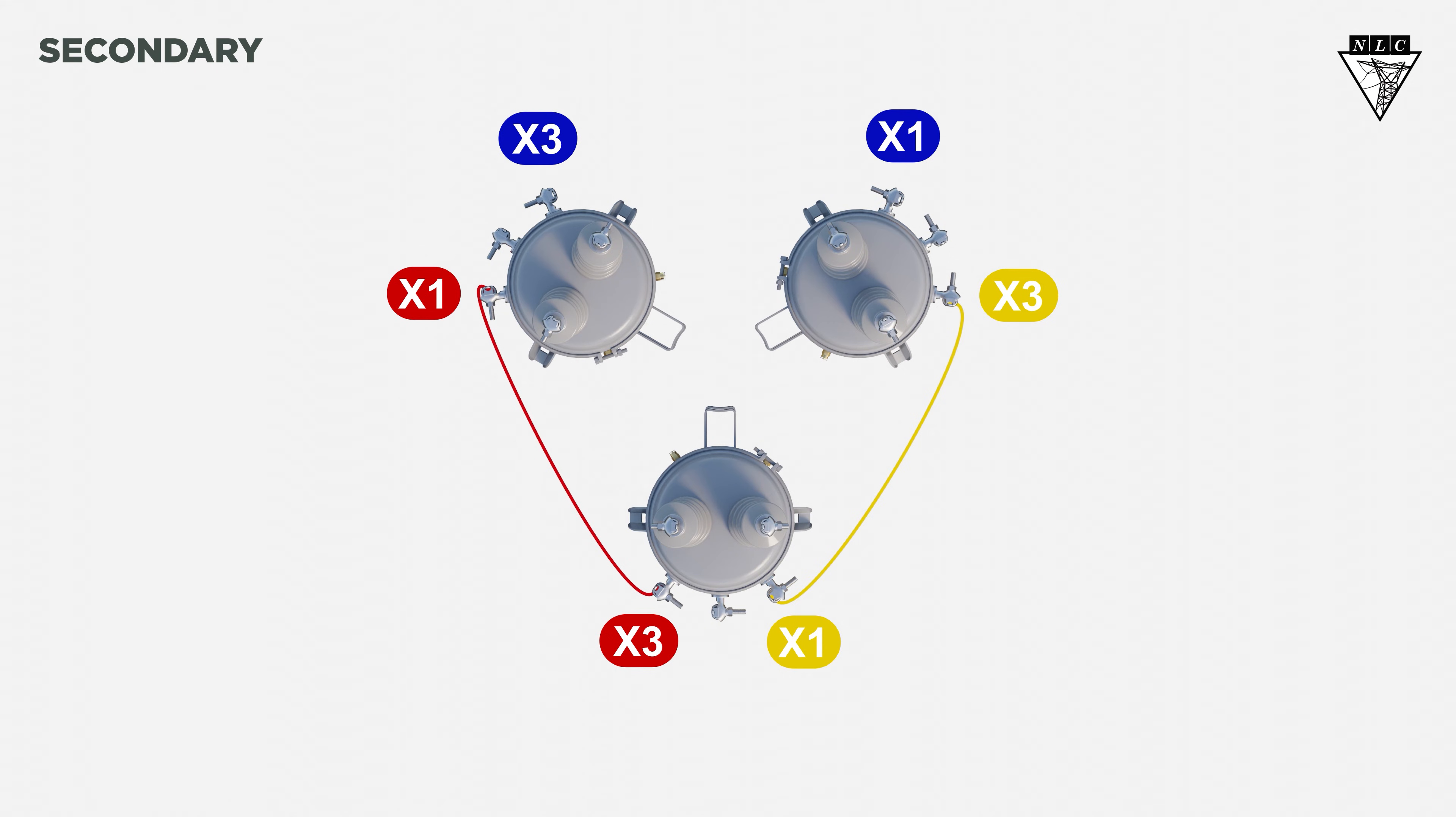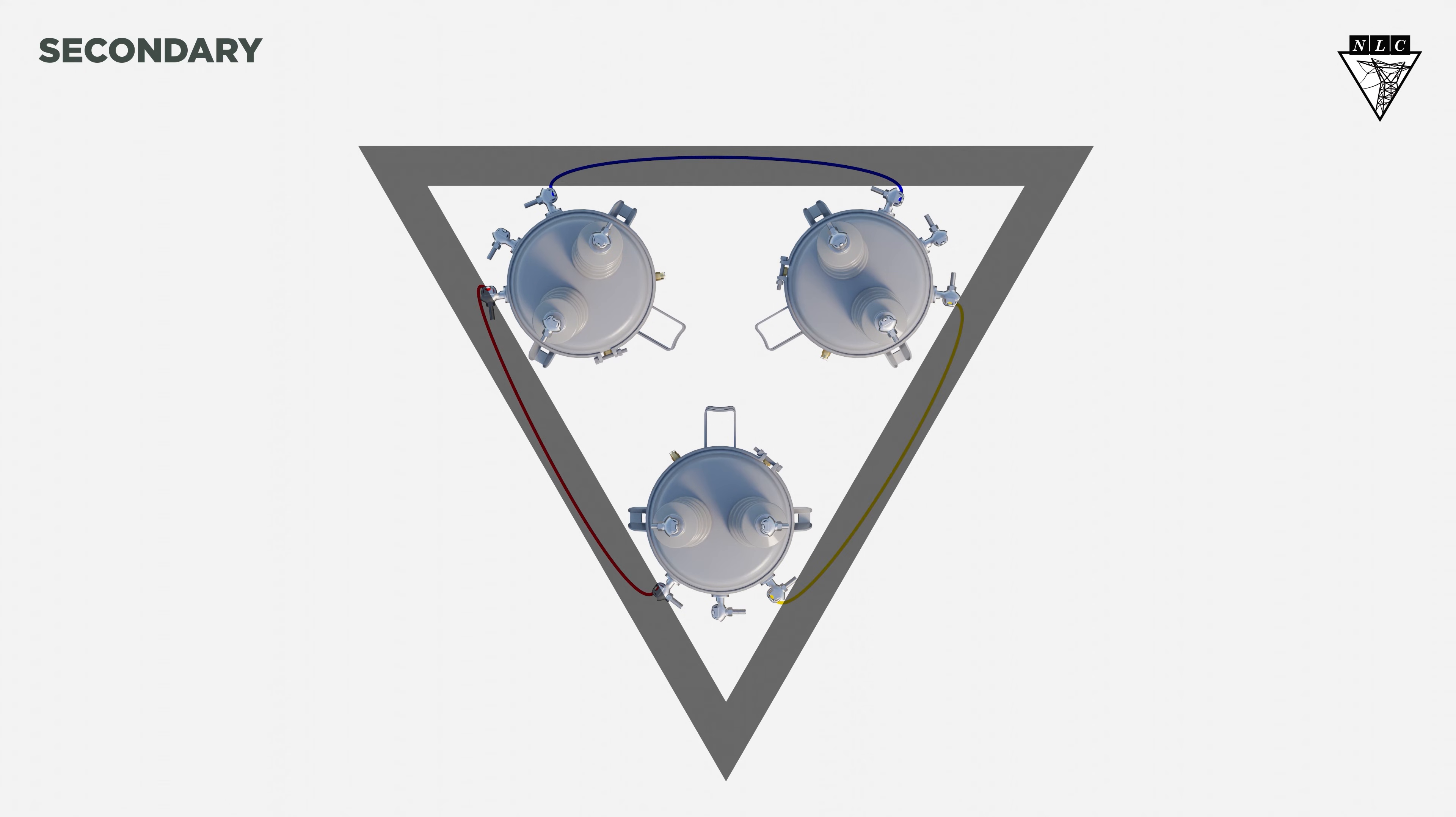Then connect the X1 of the third transformer to the X3 of the first transformer. As you can see, this forms a closed triangular loop on the secondary side, just like the primary.